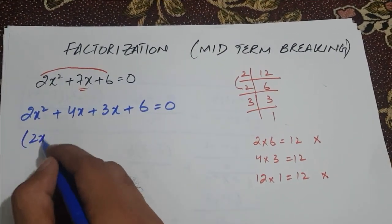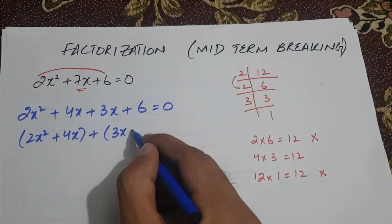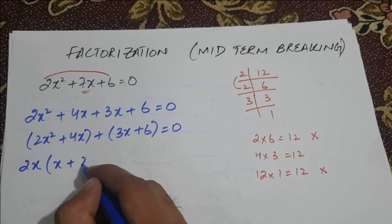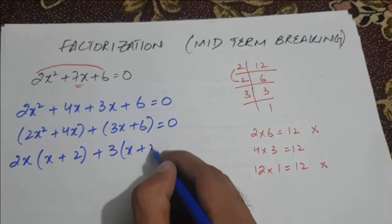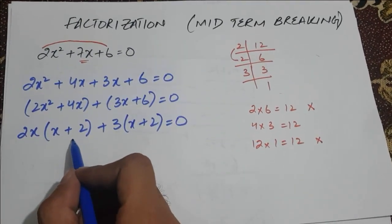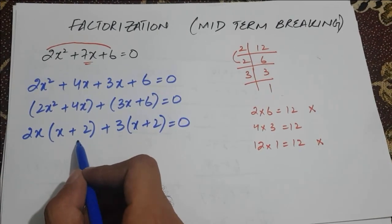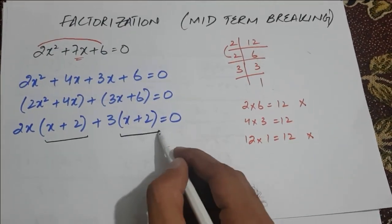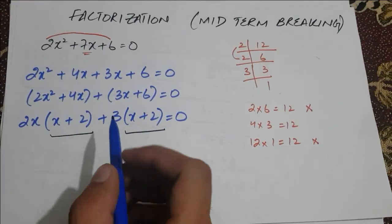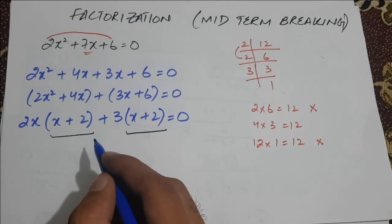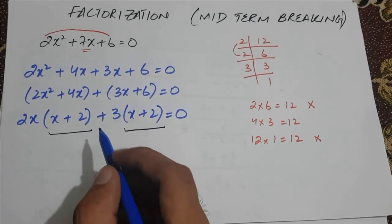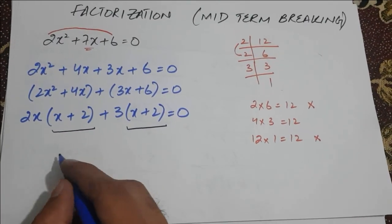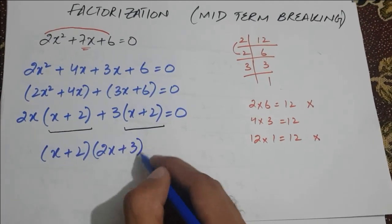Now we combine the first two terms: 2x² + 4x, and in the second bracket we have 3x + 6. We take 2x common and get (x + 2), then take 3 common and get (x + 2). Here is an important tip: if the terms in the brackets after taking out the common factor are the same, you have properly factorized your quadratic equation. Further solving, we get (x + 2) common, and the remainder gives us (2x + 3) = 0.